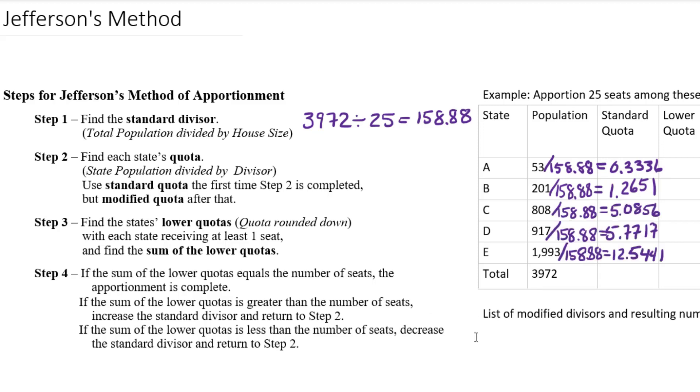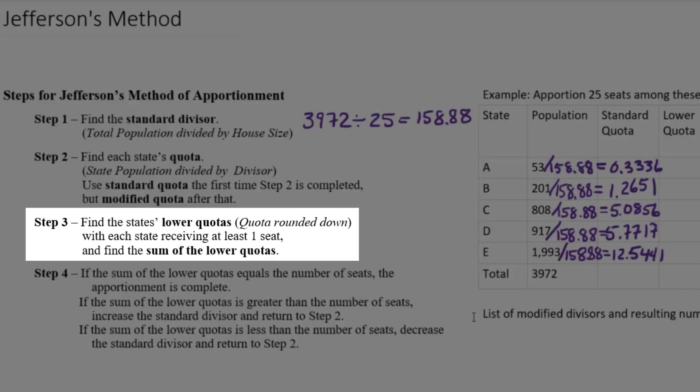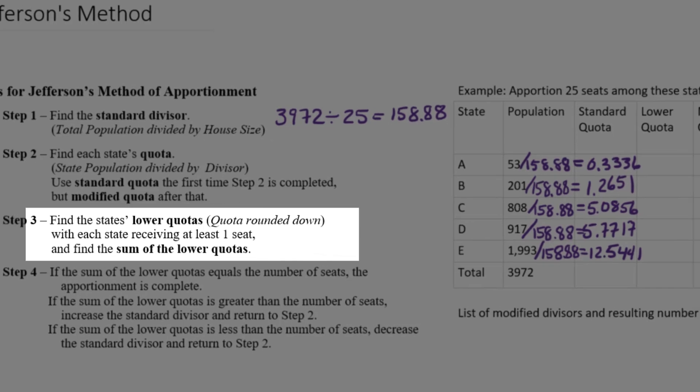So I'm going to continue and divide each state population by 158.88. This completes step two, we have found each state's standard quota. Now we're going to use that to get the state's lower quota. That just means the whole number part of the standard quota. In other words, the standard quota rounded down.